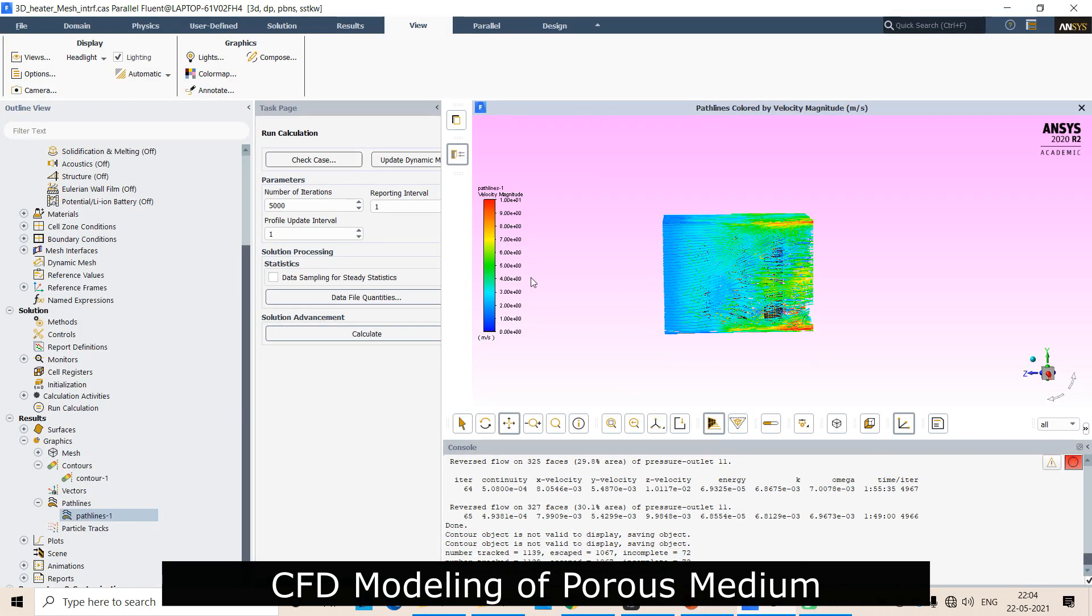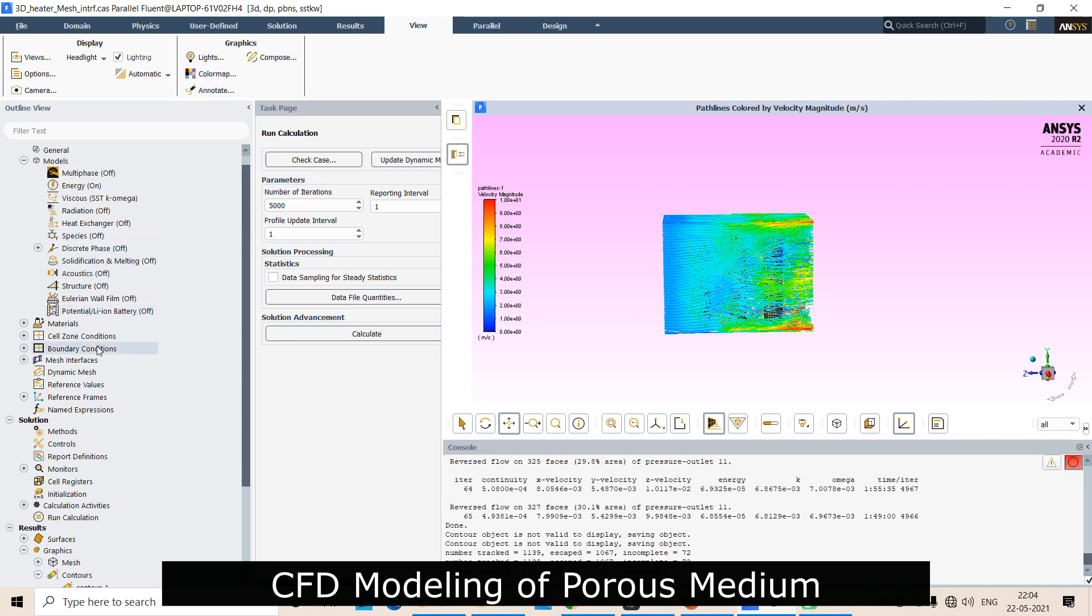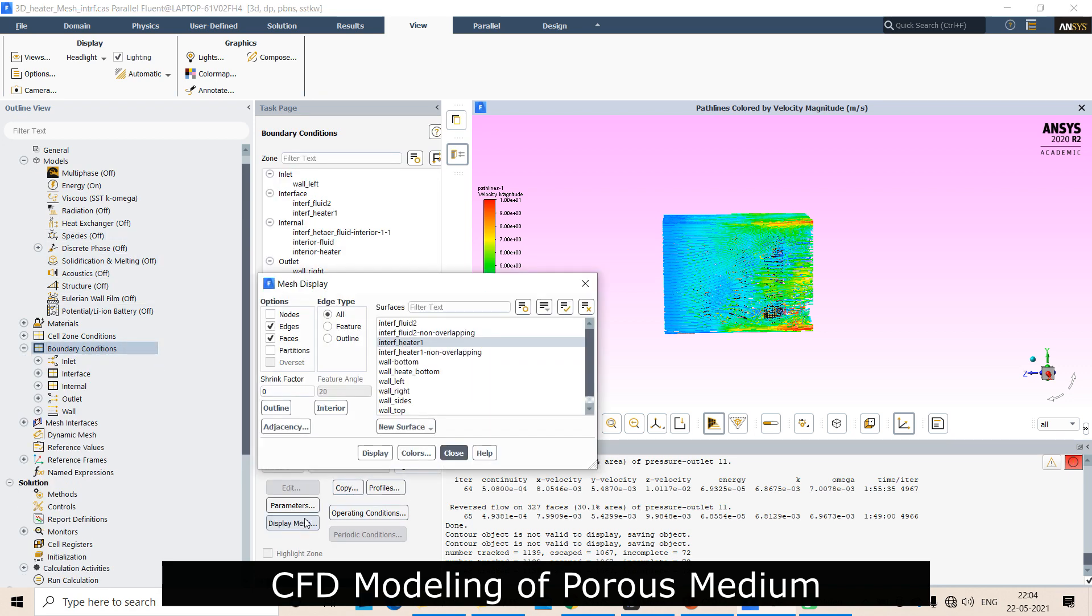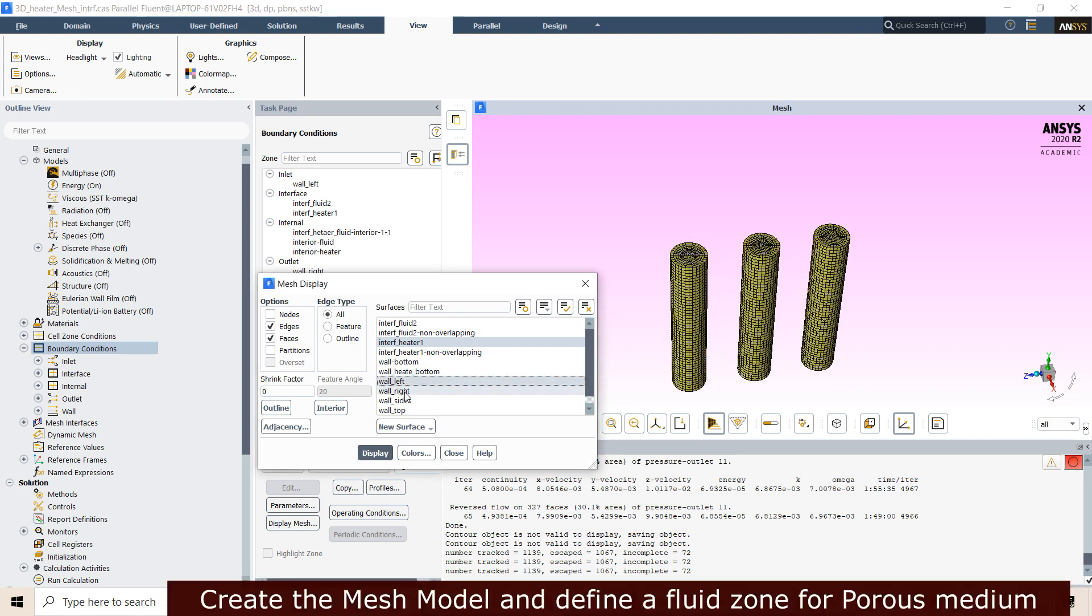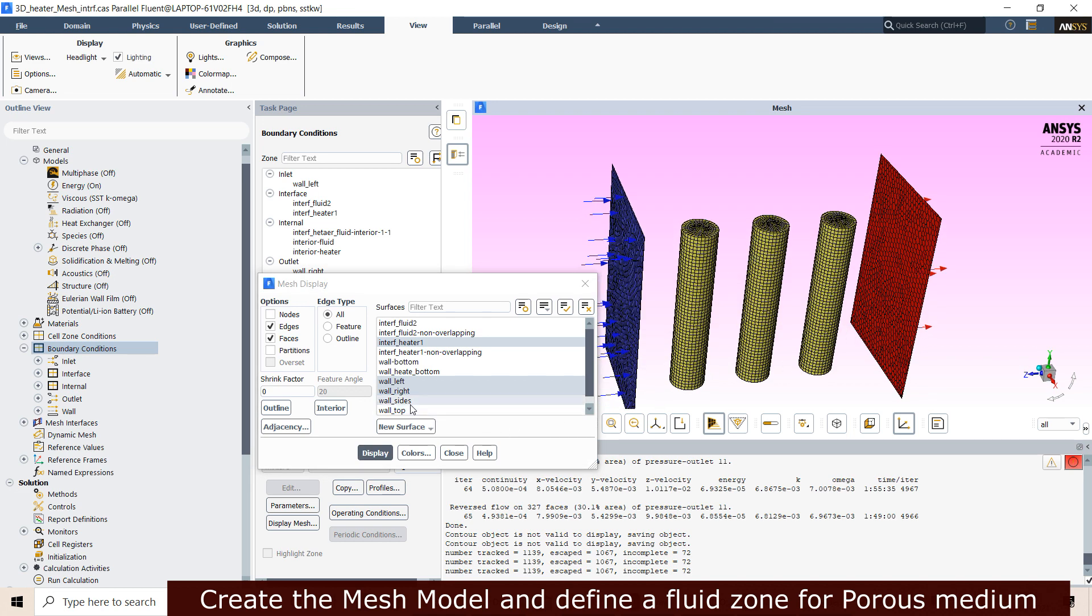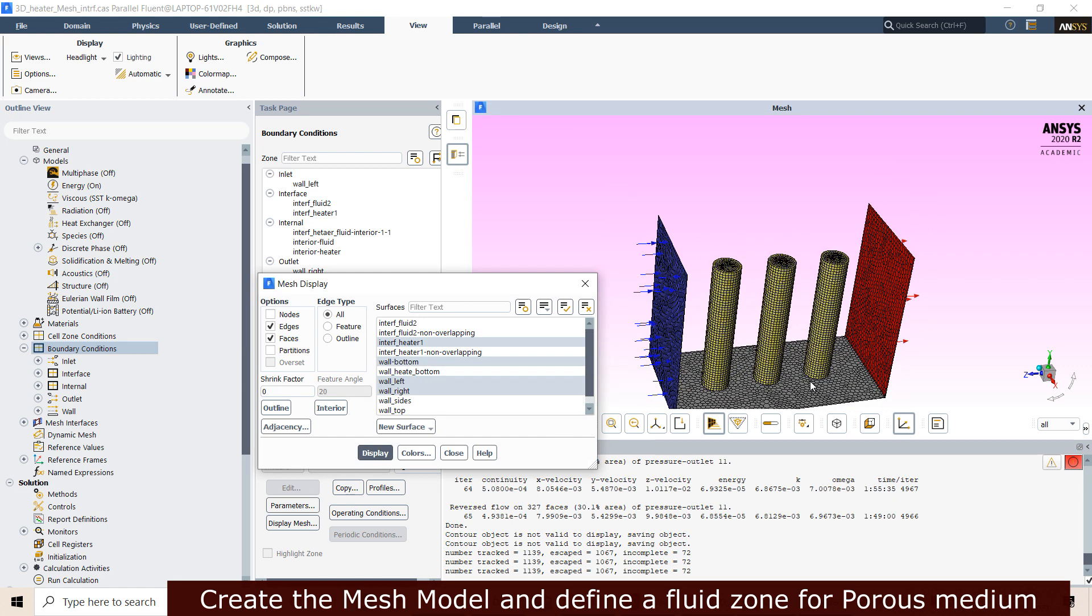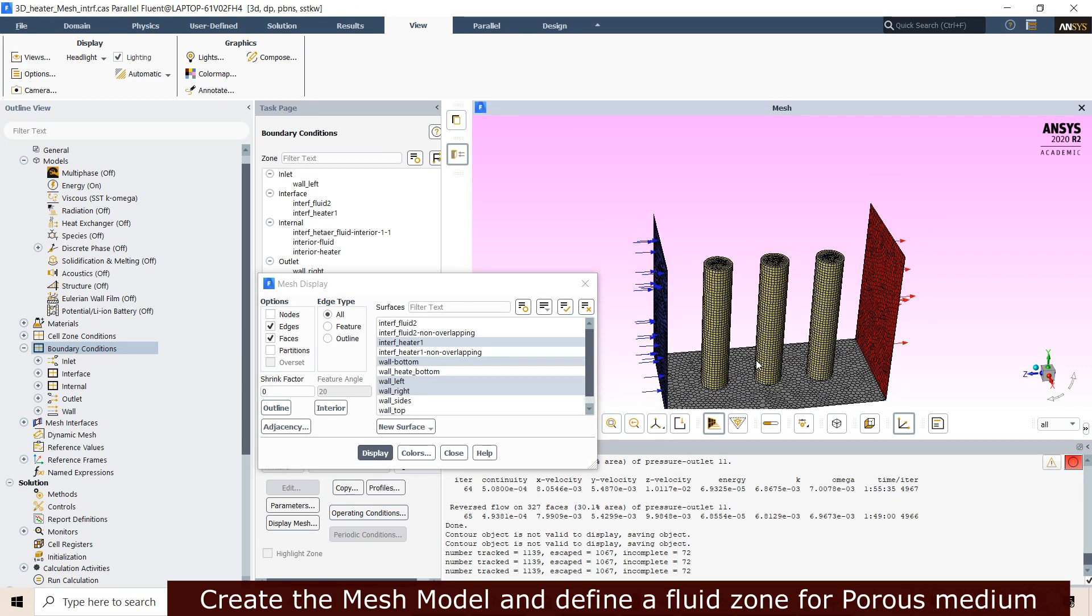Here is a block. These are three porous blocks. I will show you: this is the inlet and this is the outlet. And this is the bottom wall. I want to model these three blocks as a porous medium.